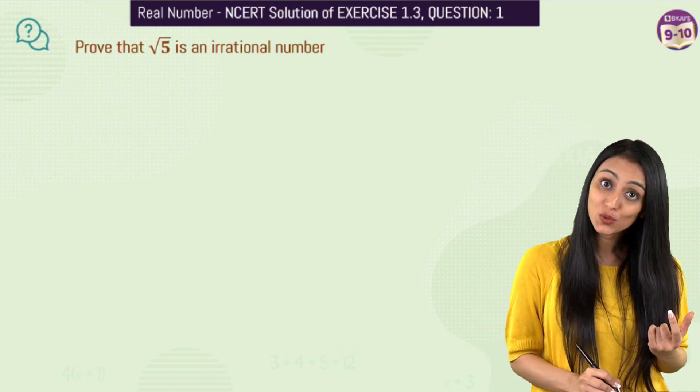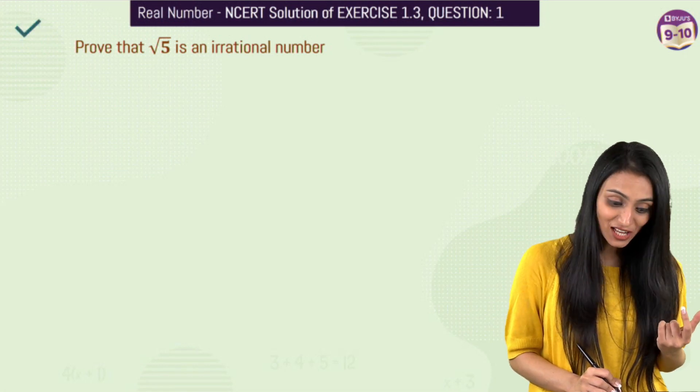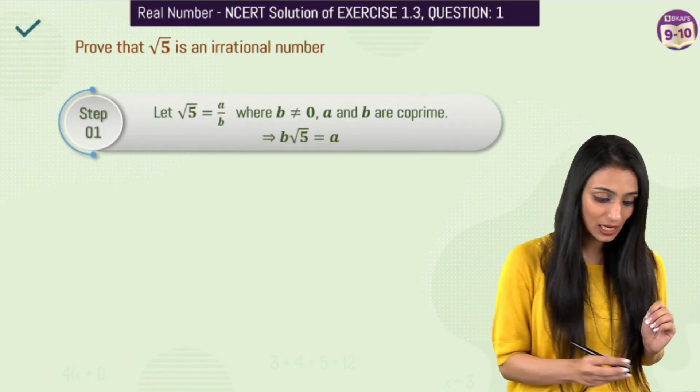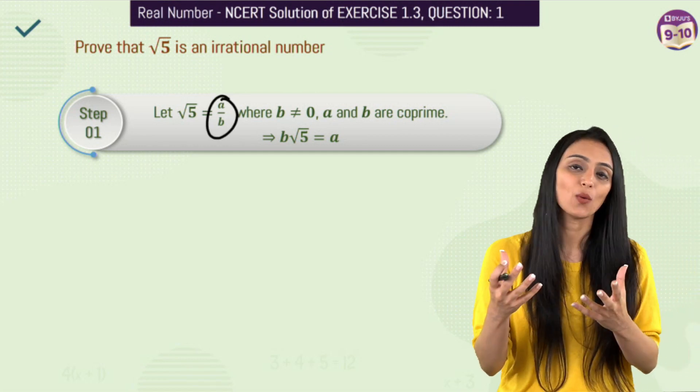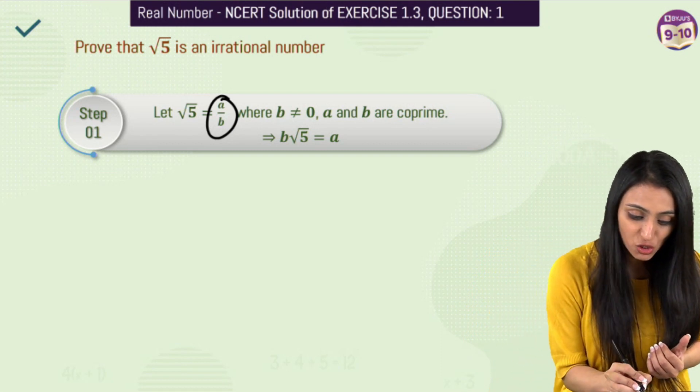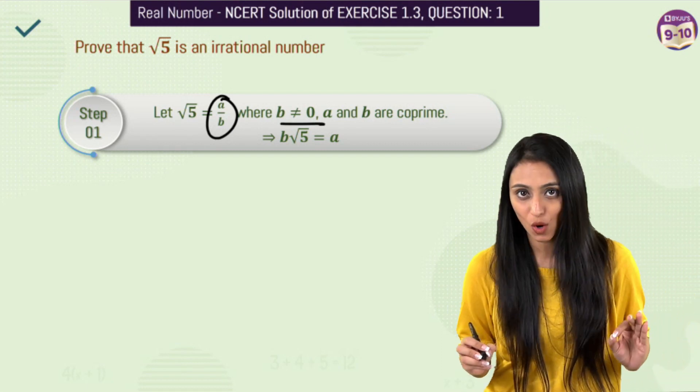That means first of all we are going to assume that root 5 is a rational number. So if this is a rational number, that means root 5 is actually going to be equals to a by b. Where b should not be equal to 0, denominator cannot be 0. Otherwise it's going to be not defined.